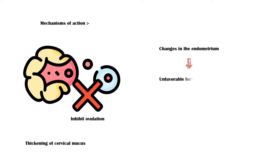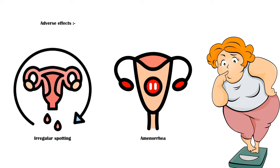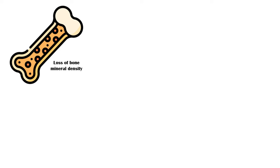Common side effects of Depo-Provera include irregular spotting, amenorrhea or absent menstruation, weight gain, loss of bone mineral density with prolonged use which can lead to osteoporosis, acne, breast tenderness, and delay in return to fertility.